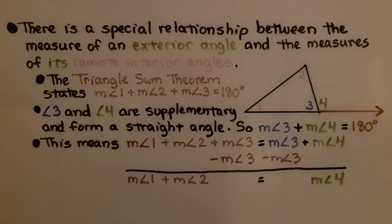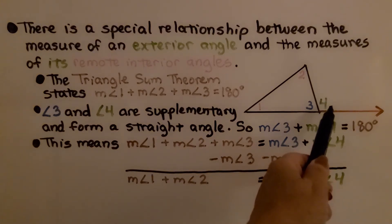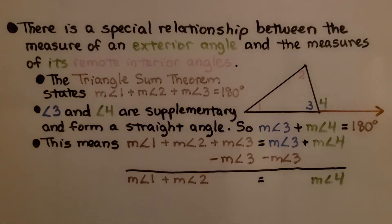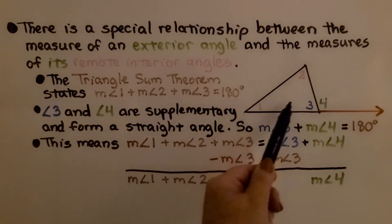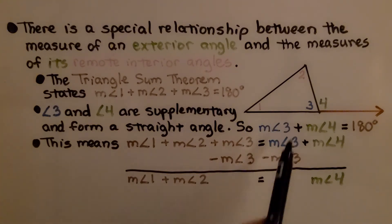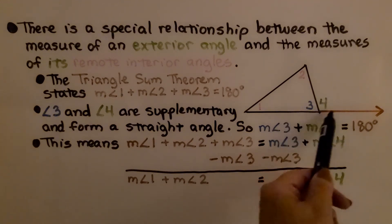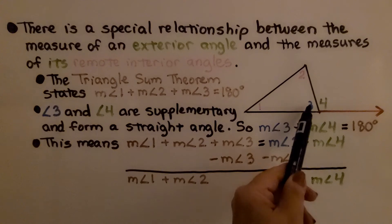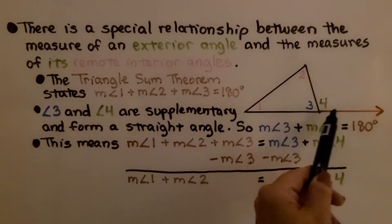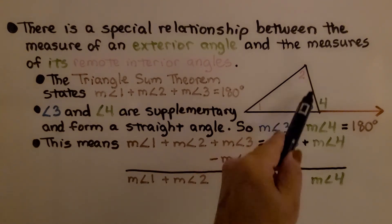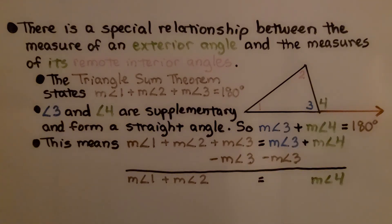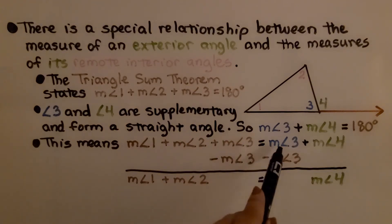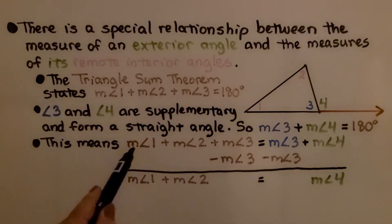There is a special relationship between the measure of an exterior angle and the measures of its remote interior angles. The triangle sum theorem states that the measure of angle one plus the measure of angle two plus the measure of angle three equals 180 degrees. Angle three and angle four are supplementary and form a straight angle, so three plus four also equals 180 degrees. This means the measure of angle one plus angle two plus angle three equals the measure of angle three plus angle four.